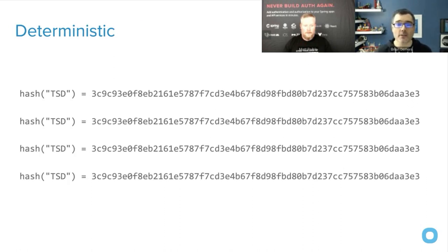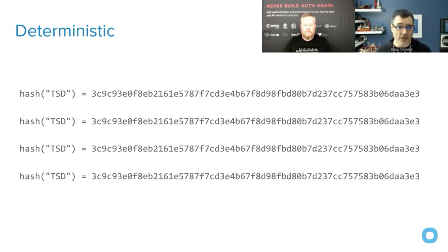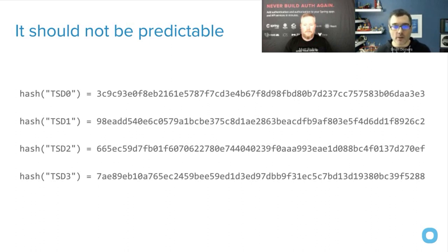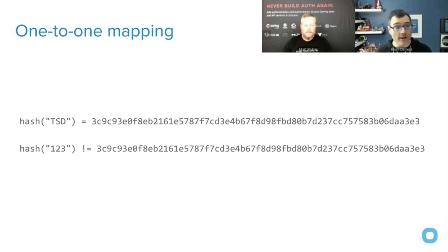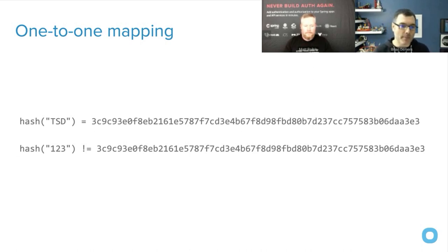Hashes are deterministic — the same input always gives the same output — so you take the submitted password, hash it, and compare with the stored hash to let users in. They're not predictable; if you change one character on the input, the whole hash changes. And it's a one-to-one mapping — one input equals one unique hash, so there are no collisions between passwords. Doing this in Spring is really easy — Spring Security provides implementations. In this case I'm using SCrypt. It's just a bean, and using it is just as easy as calling the encode method of your password encoder.